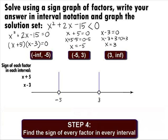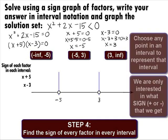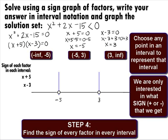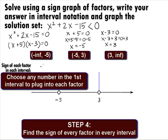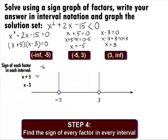In Step 4, we need to find the sign of every factor in every interval. We can choose any point in an interval to represent that interval, plug it into each factor, and determine if the sign is positive or negative. Let's choose negative 6 from the first interval of negative infinity to negative 5. Plugging negative 6 into the first factor: negative 6 plus 5 equals negative 1, so that factor is negative in that interval. Plugging negative 6 into the other factor: negative 6 minus 3 equals negative 9, so we have another negative factor in that interval.